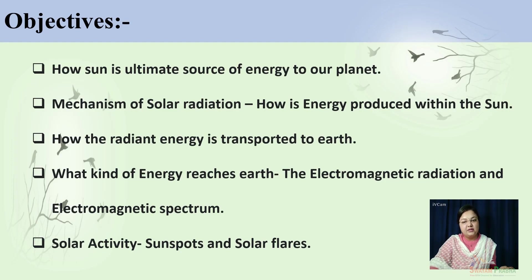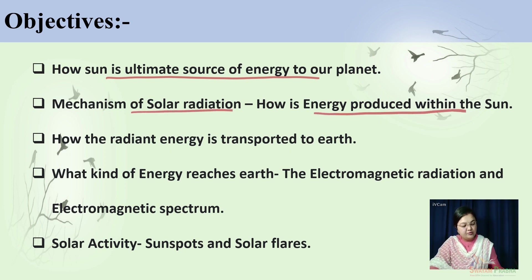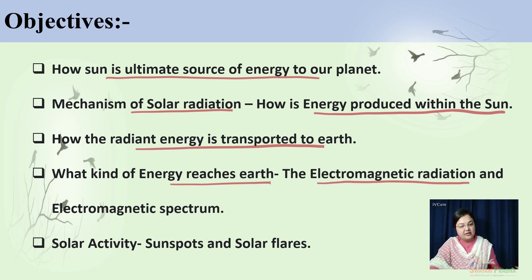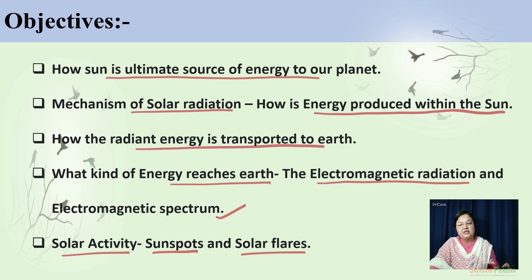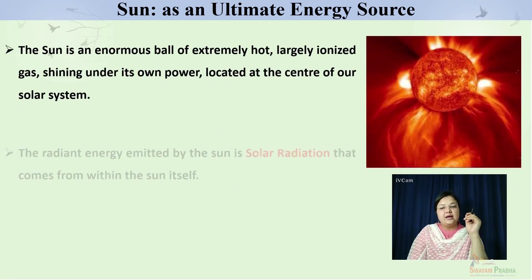The objectives of this lecture are: to understand how the sun is the ultimate source of energy to a planet; the mechanism of solar radiation — how energy is produced within the sun and how radiant energy is transferred to Earth; what kinds of electromagnetic radiations exist and what is the electromagnetic spectrum; and briefly, what are solar activities, sunspots, and solar flares, and how these affect insolation or temperature on Earth.